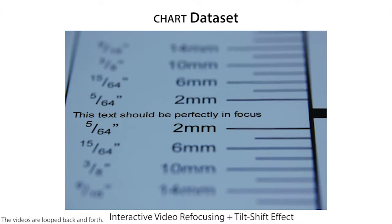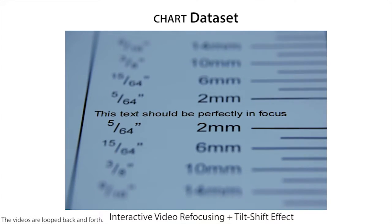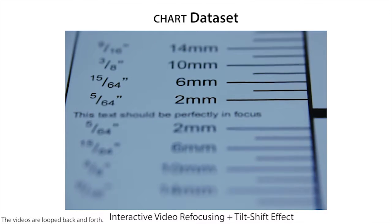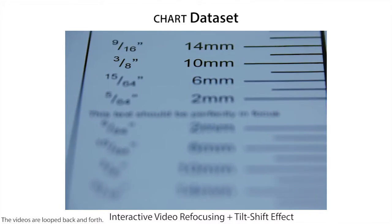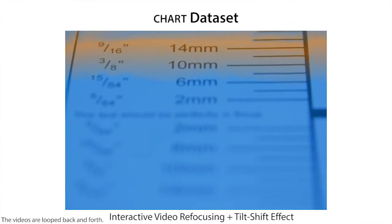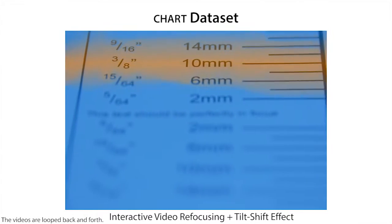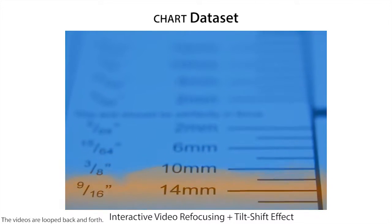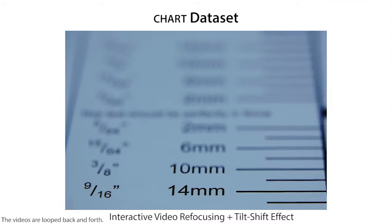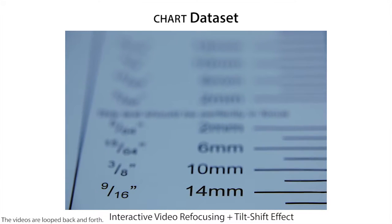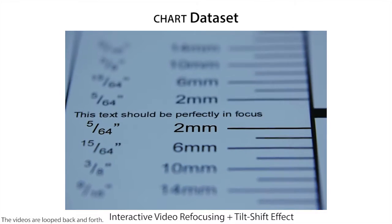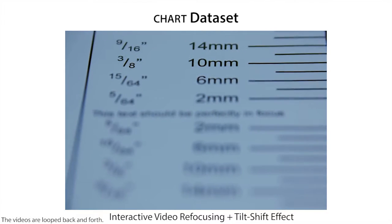We now apply a virtual tilt-shift effect, which results in a compressed depth of field. Here we visualize the depth of field in orange and show the out-of-focus regions in blue. Note how smoothly we can swipe the depth of field across the chart.